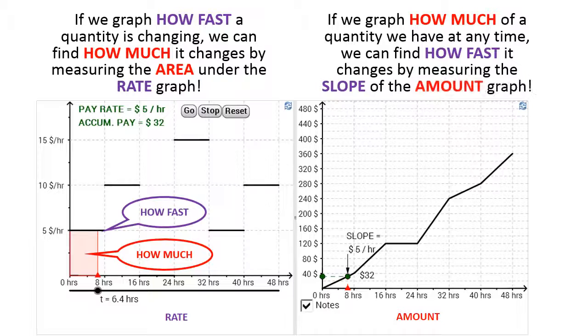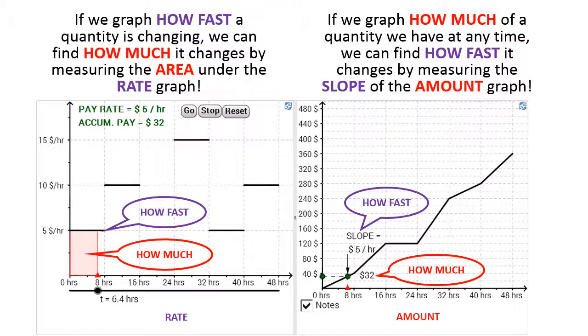Also, if we graph how much of the quantity we have at any particular time, we can find out how fast it's changing by measuring the slope of the amount graph. So here we have how much, $32, and we divide that by the 6.4 hours, and we get $5 per hour, which is how fast.